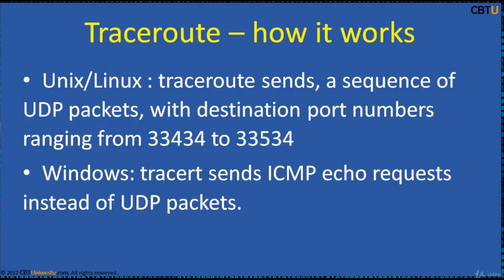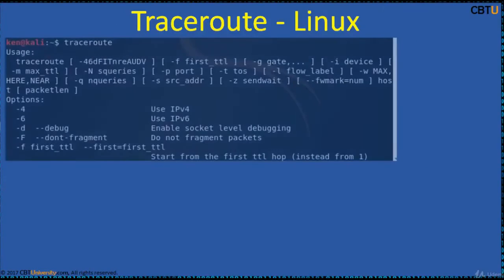How Traceroute works: In Unix and Linux, Traceroute sends a sequence of UDP packets with destination port numbers ranging from 33,434 to 33,534. In Windows, Traceroute sends ICMP echo requests instead of UDP packets. The Time To Live (TTL) value, also known as hop limit, is used to determine the intermediate routers being traversed towards the destination. Traceroute sends packets with TTL values that gradually increase from packet to packet, starting from TTL value of 1. Routers decrement TTL values by 1 and discard packets whose TTL value has reached 0, returning the ICMP time exceeded error message.